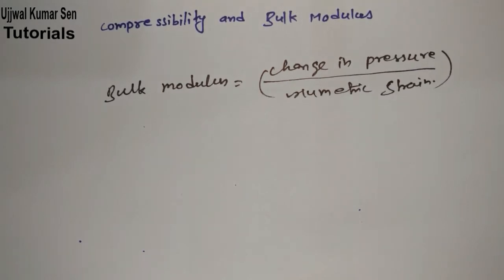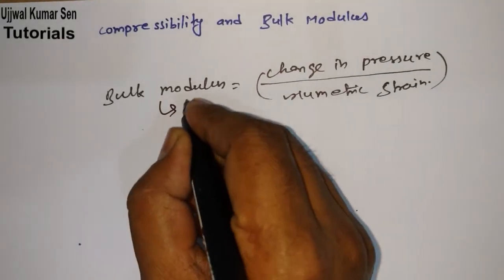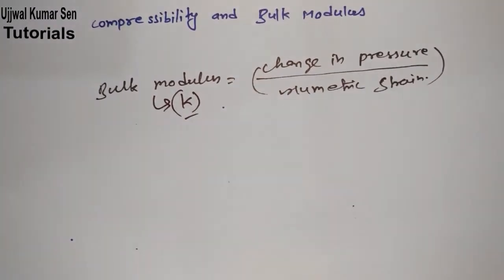What is strain? Change in any quantity or dimension upon original dimension. So we're considering volume, so it would be change in volume upon original volume of that particular space. Bulk modulus is denoted by K.